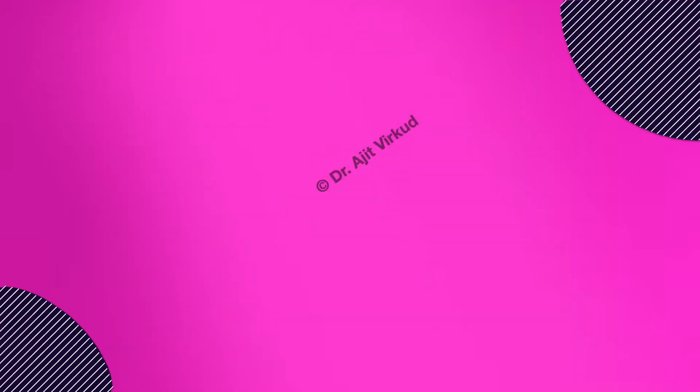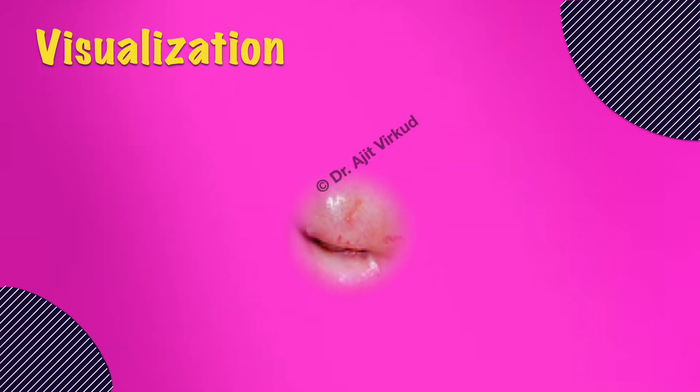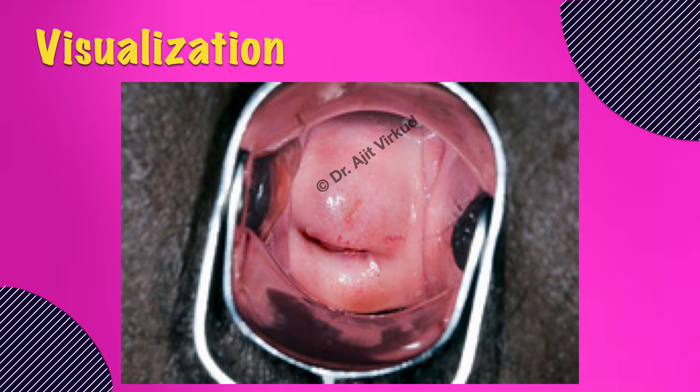Identify the vaginal walls, noting their color, rugosity, lesions, and discharge. Visualize the cervix, noting its shape, size, and surface. Look for erosions, ectopy, ulcers, and growths on the cervix. A round or pinpoint external os suggests nulliparity, while a transverse slit-like os indicates multiparity.